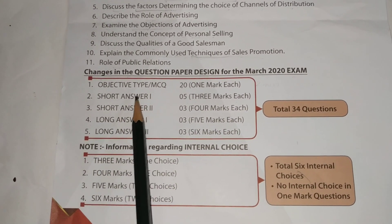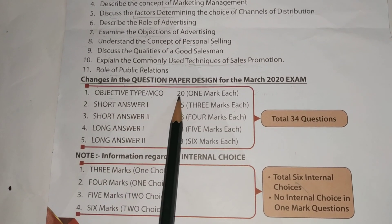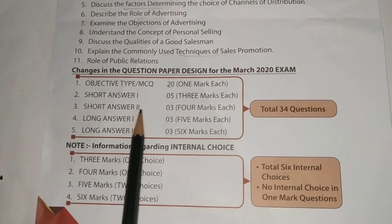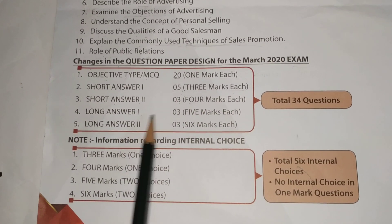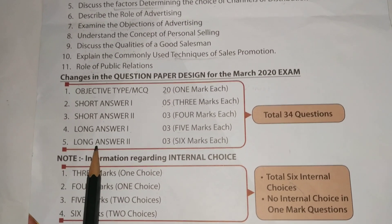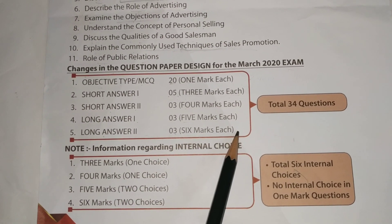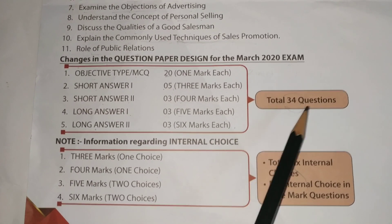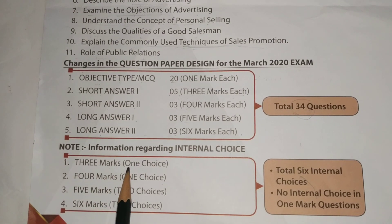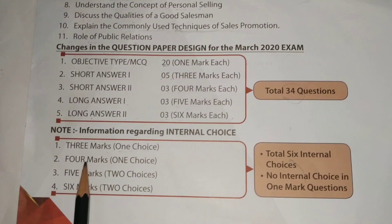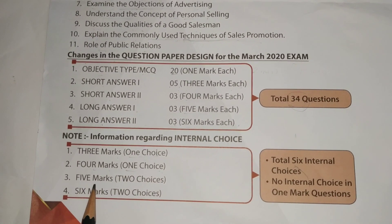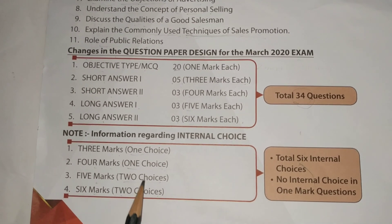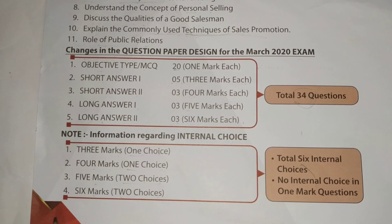The question paper is designed for March 2020 exam. There are objective type questions worth 3 marks each, then short answer questions worth 4 marks each, long answer questions worth 5 marks each, then longer answer questions worth 6 marks each — total 34 questions. With internal choice: 3 marks questions have 1 choice, 4 marks questions have 1 choice, 5 marks questions have 2 choices, and 6 marks questions have 2 choices — a total of six internal choices.